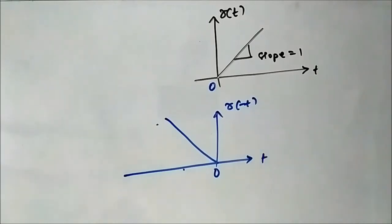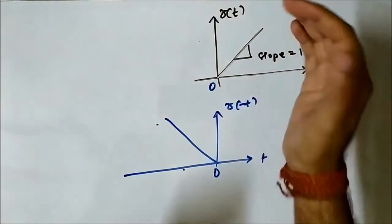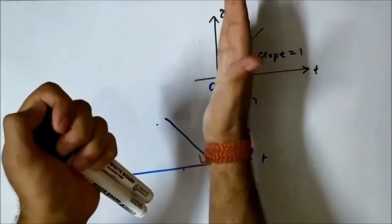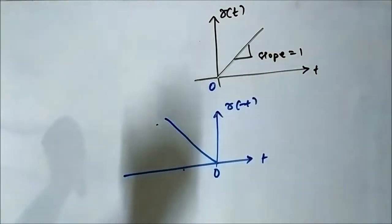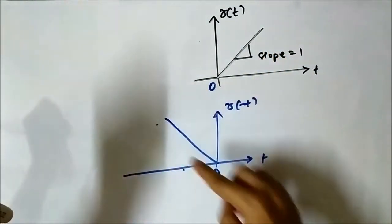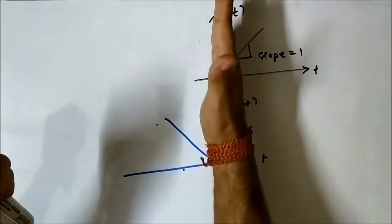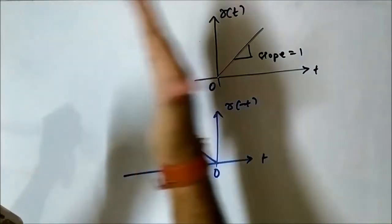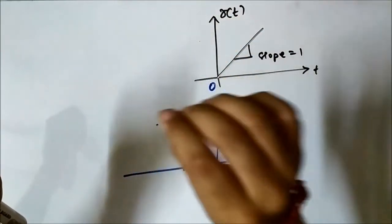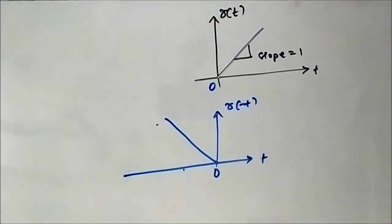This is the time-reversed ramp signal. This is how it gets done: the signal we have, we just fold it about the vertical axis — the amplitude axis. The time-reversed signal is the mirror image of the original signal about the vertical axis. It is as if we place a mirror there — the time-reversed signal is just the mirror image of the original signal about the vertical axis.